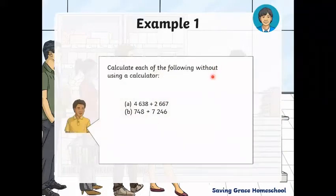Example 1: Calculate each of the following without using a calculator. We have 4,638 plus 2,667 for the first question, and for the second question we have 748 plus 7,246. Try those out, pause the video, and press play when you're ready to see the answers, and I'll go through them with you.